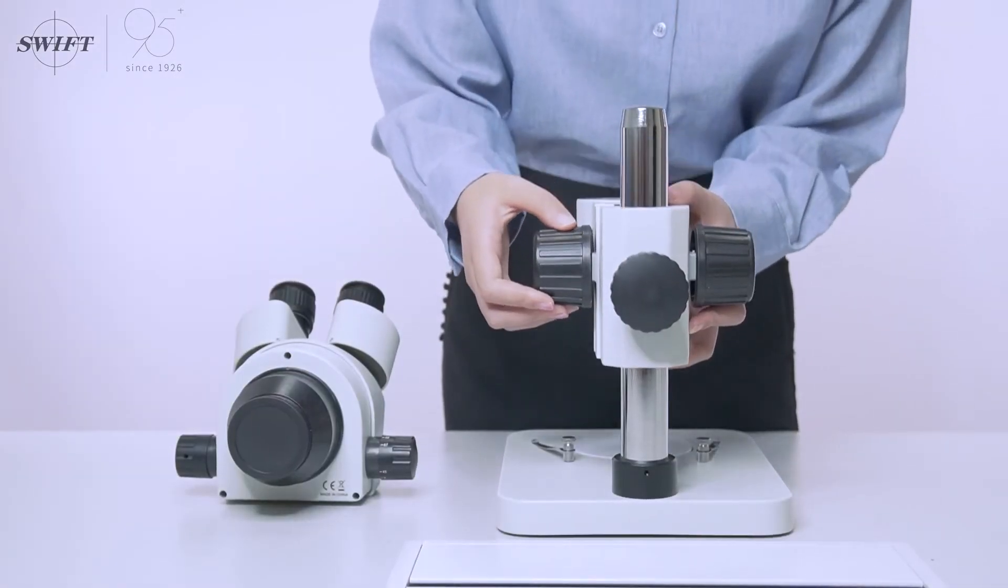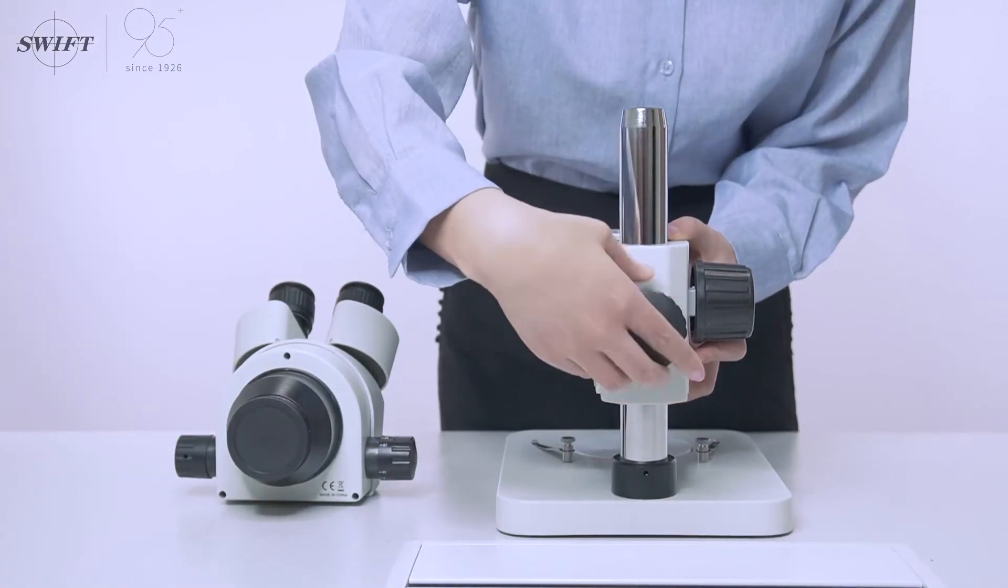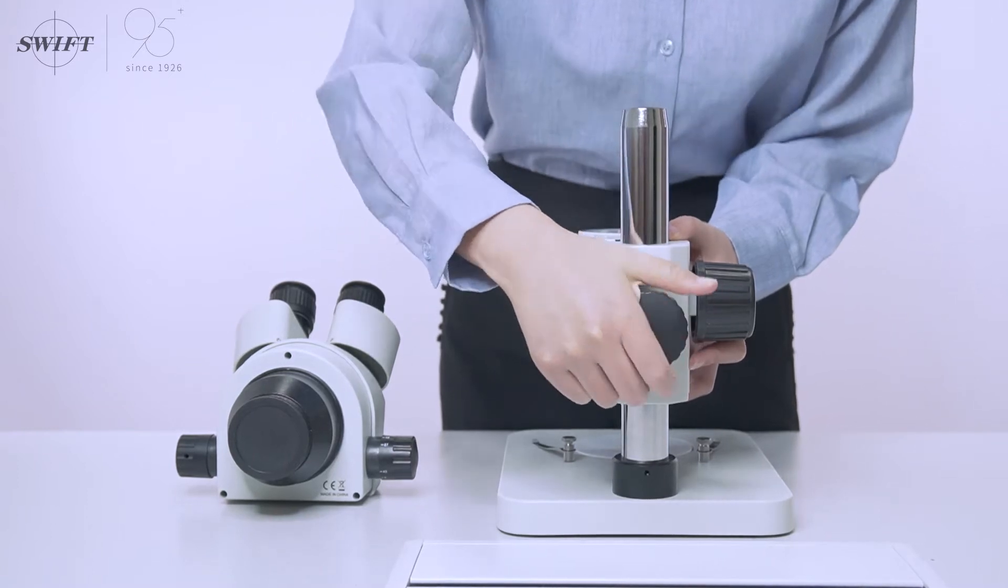Put the focusing or lifting mechanism into the main machine column. Adjust the upper and lower heights as suitable and lock the column knob.